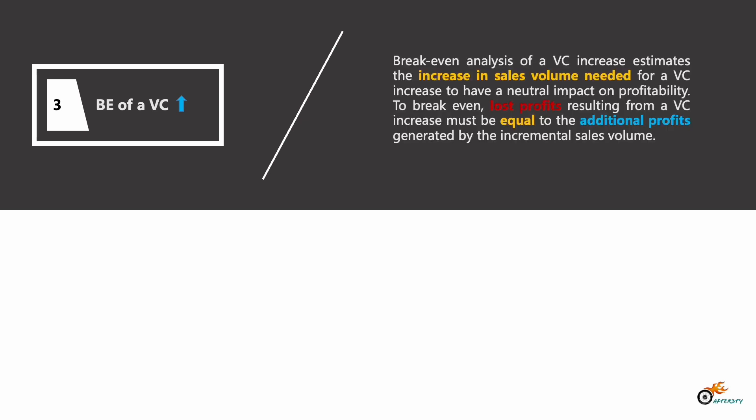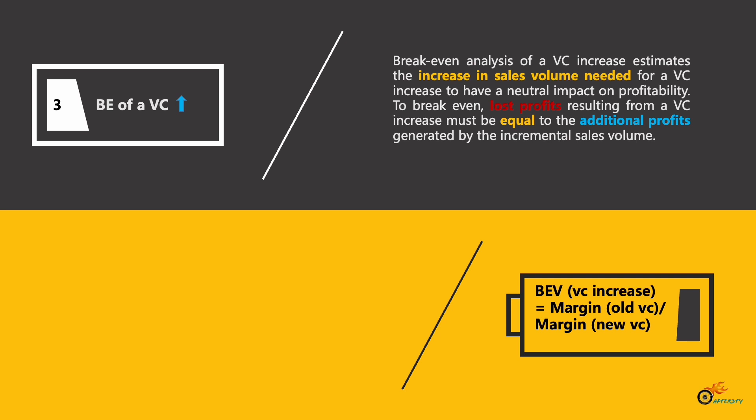For the last example, let's look at how to calculate the break-even point when variable costs increase. The break-even analysis of a variable cost increase estimates the increase in sales volume needed for a variable cost increase in order to have a neutral impact on profitability. The equation is: break-even volume for a variable cost increase equals the margin at the old variable cost divided by the margin at the new variable cost.